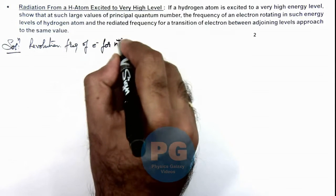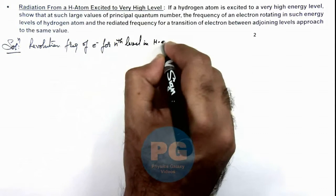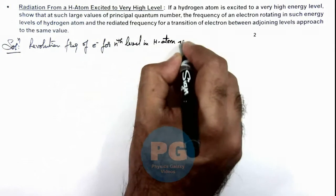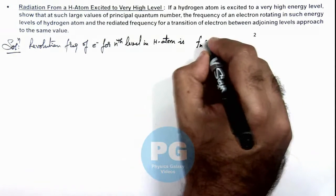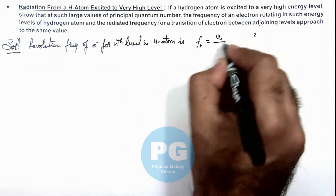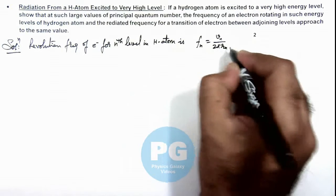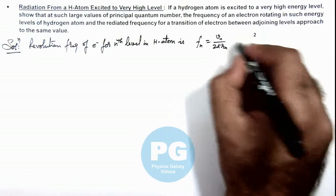Now if we talk about the transition of electron for the adjoining levels n to n minus 1, we can write: if electron makes a transition from n to n minus 1, we can write radiated frequency is...